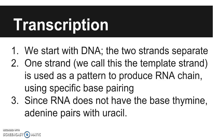Transcription is where we start in the nucleus with DNA. We separate the two strands using DNA helicase. One strand — called the template strand — is used as a pattern to produce an RNA chain, using specific base pairing. If you have an A, that is no longer going to become a T as with DNA base pairing rules, because T no longer exists in the RNA chain — that is going to become a U. If you have a C, it can still pair with a G. If you have a T, it can still pair with an A because A still exists in RNA.